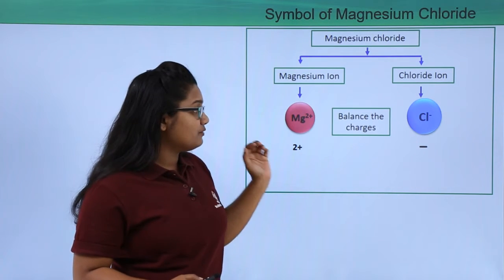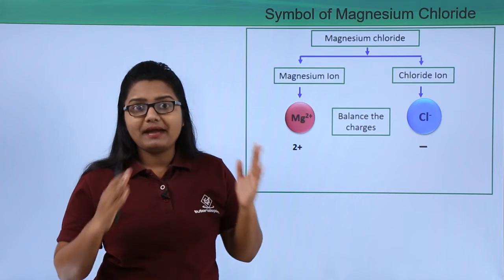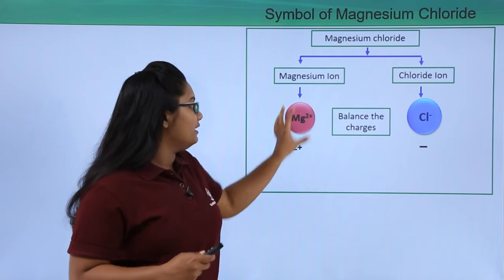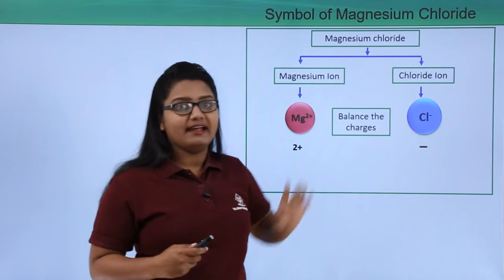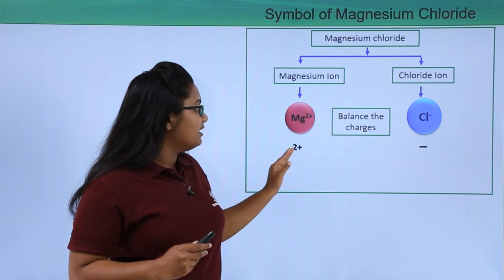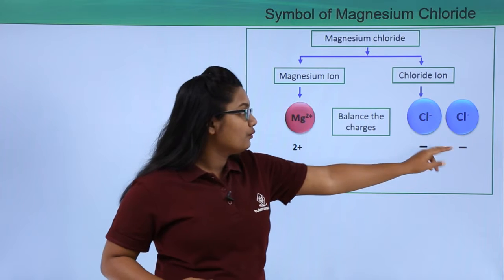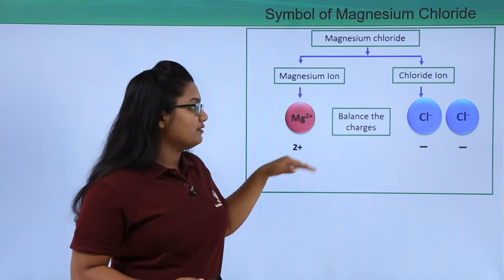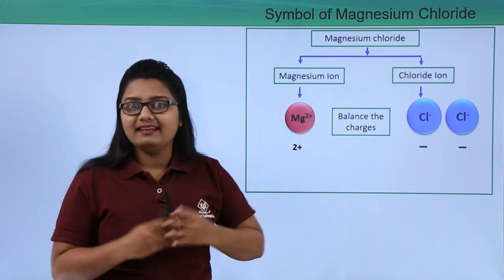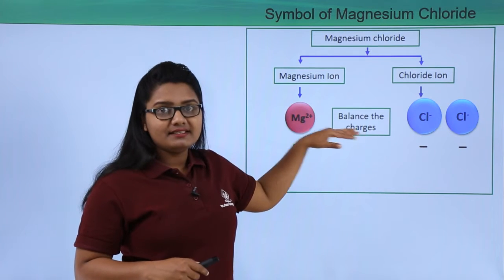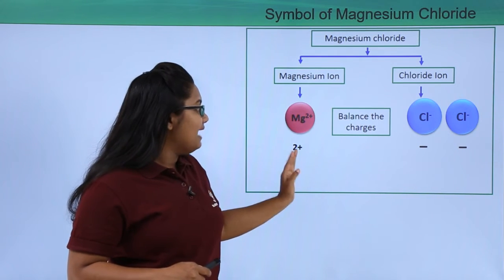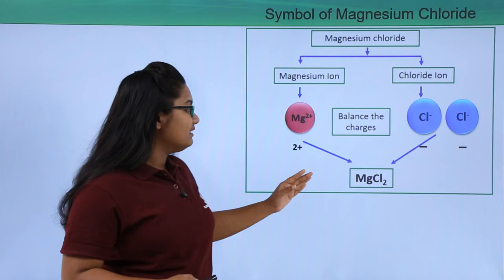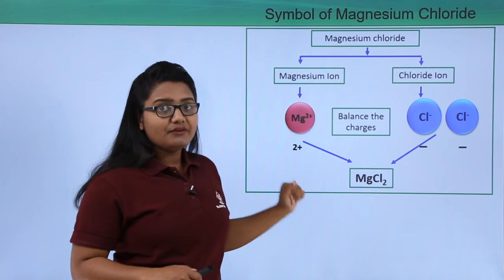We need to balance the charges. There are two positive charges and one negative charge, so they don't balance. To balance them, we can increase the number of chloride ions. Adding one more chloride ion gives two negative charges and two positive charges, which completely balance each other. So we need two chloride ions for one magnesium ion, giving the formula MgCl₂.